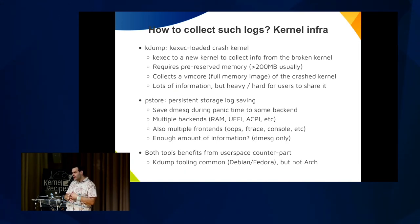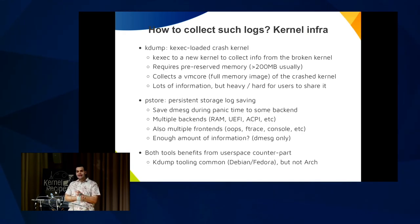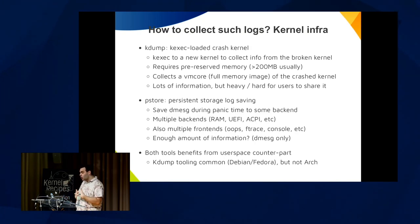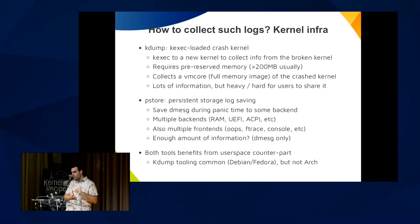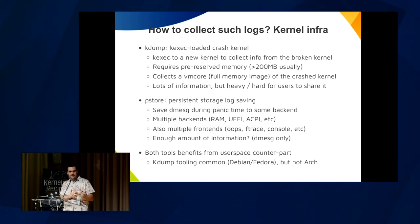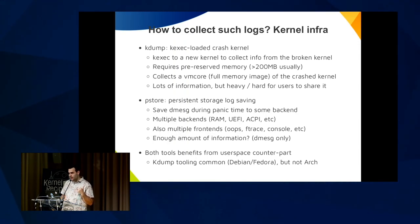We have two main mechanisms for log collection. One is kdump: it's a kexec process of jumping from one kernel to another at panic time. For that we need to pre-reserve memory — nowadays like 200 megabytes or more — and pre-load the kernel and initrd in this area. When a panic happens it jumps to this new crash kernel, where tools in the initrd can collect the memory of the broken kernel. We call this a vmcore, which is a full memory image of the broken kernel.